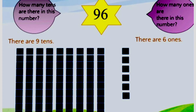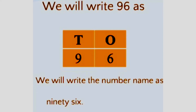Then let's check how many ones are there. Count: 1, 2, 3, 4, 5, 6. There are 6 ones in the number 96. Under the ones place write 6 and under the tens place write 9.